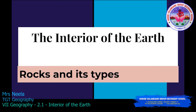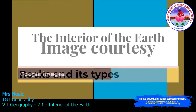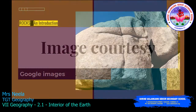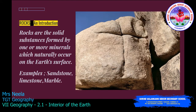Hello children. In this video we are going to see about the rocks and its types from the chapter 'The Interior of the Earth.' What is a rock? Rocks are the solid substances formed by one or more minerals which naturally occur on the earth's surface. Examples: sandstone, limestone, marble.